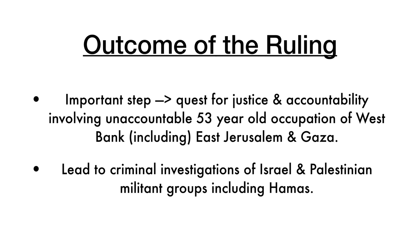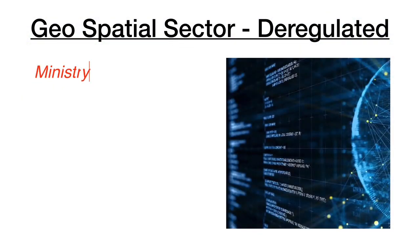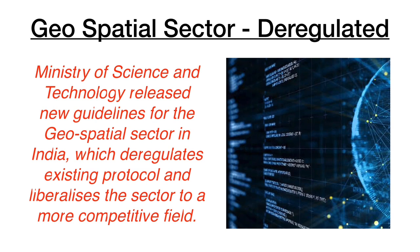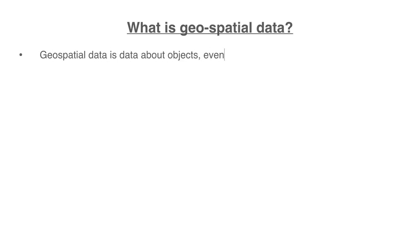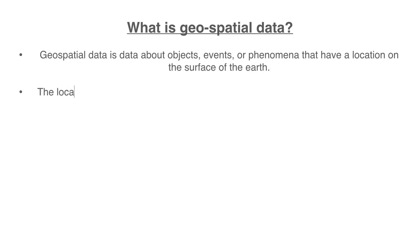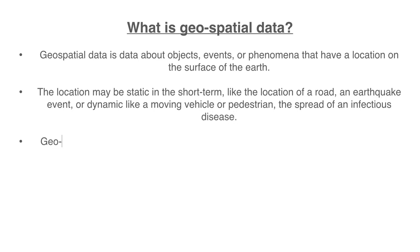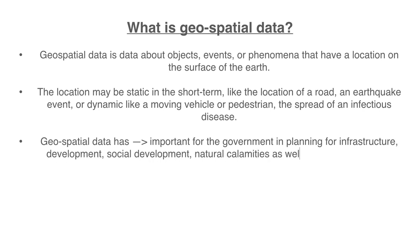The second headline: the geospatial sector is deregulated. The Ministry of Science and Technology has released new guidelines for the geospatial sector in India, which deregulates existing protocols and liberalizes the sector into a more competitive field. This is an interlinked topic — science and tech and economy. What is geospatial data? It is data about objects, events, or phenomena that have a location on the surface of the earth. The location may be static — like a road — or dynamic, like a moving vehicle or the spread of an infectious disease.